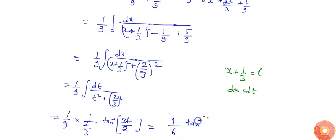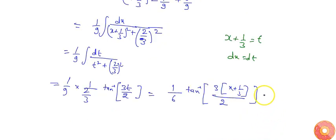Since it is indefinite integration, I will get I equals (1/6)tan⁻¹((3x + 1)/2) + C. So this will be my answer.